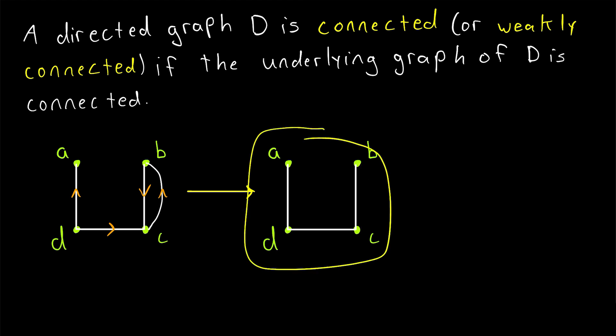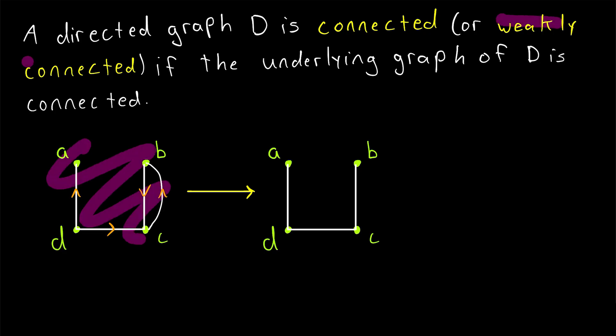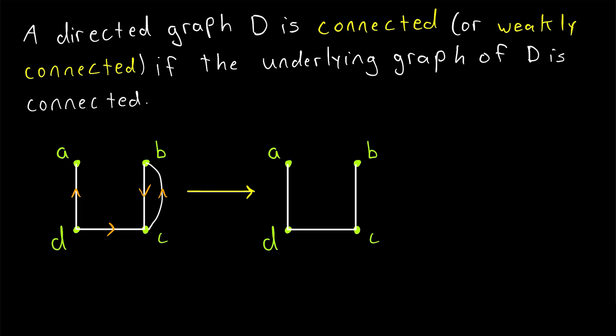Notice how this underlying graph is connected with or without the multiple edges. And if the underlying graph of a directed graph is connected, that's when we say the directed graph is weakly connected. Notice, for example, in this directed graph, it's possible to get from D to B, but it's not possible to get from B to D. It's also not possible to get from A to any other vertex in this directed graph.